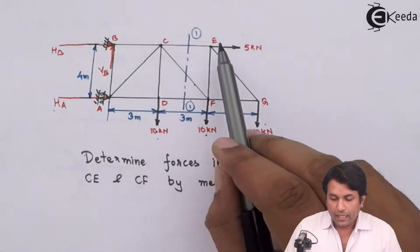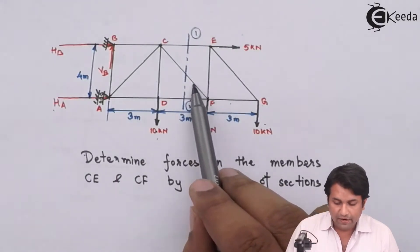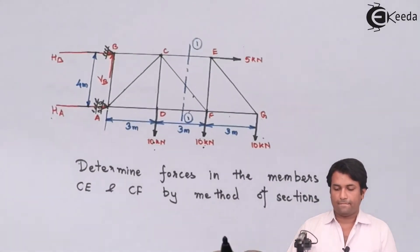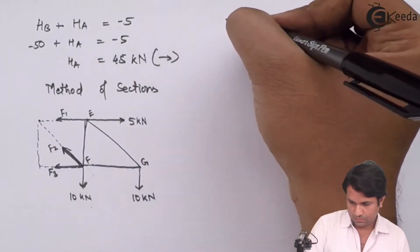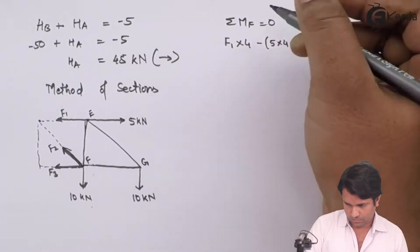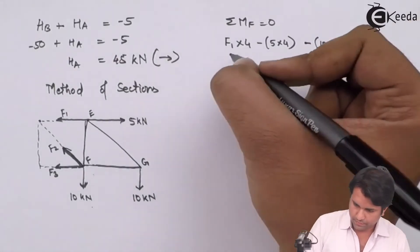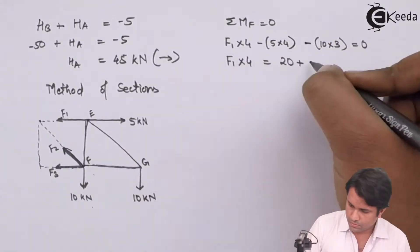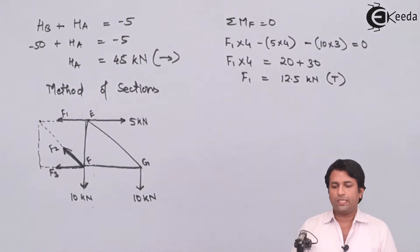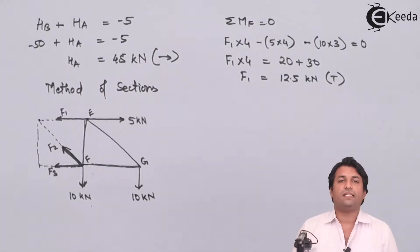I will take moment about point F first. If I take moment about F, I make the moments of F2 and F3 equal to zero, allowing me to solve for F1. The force in F1 comes out as 12.5 kN, and it is a tensile force.